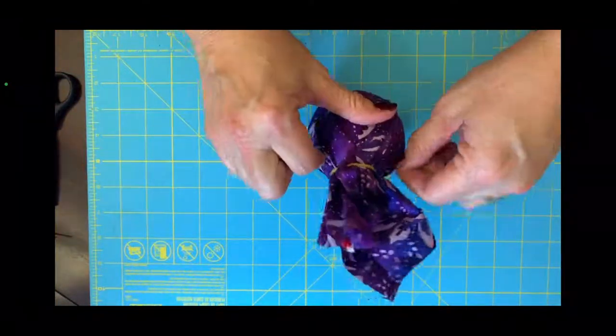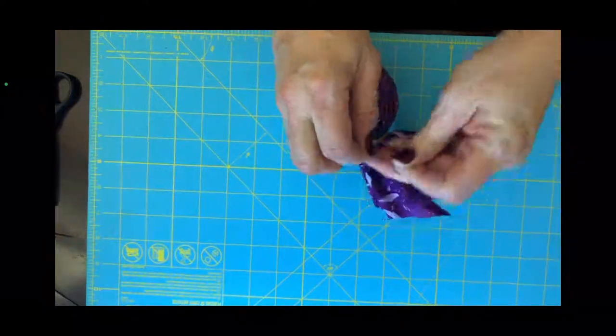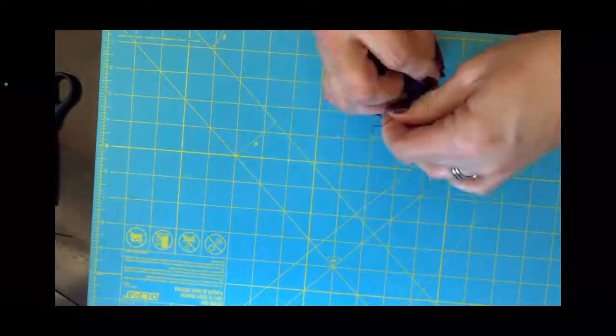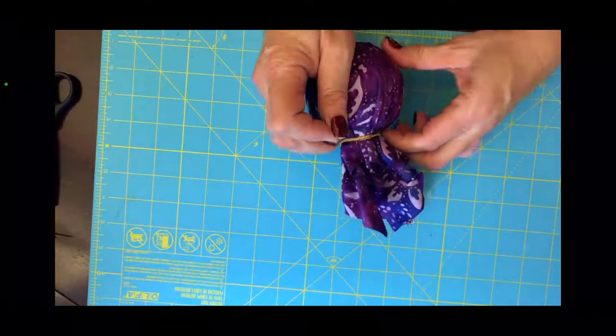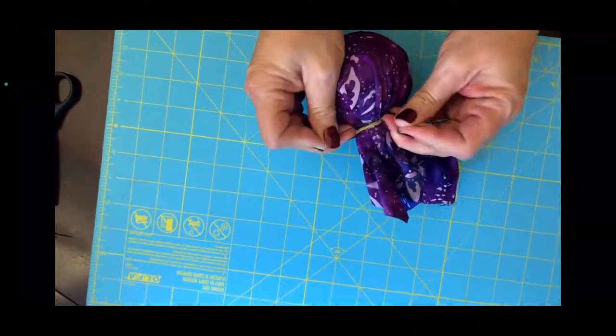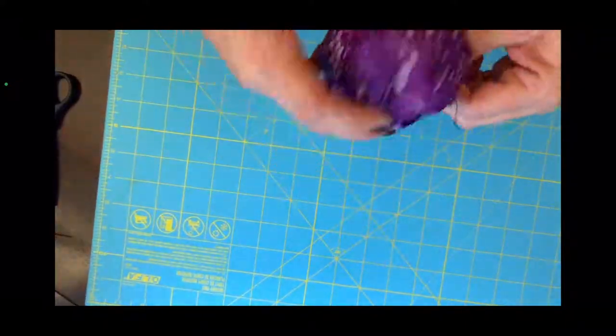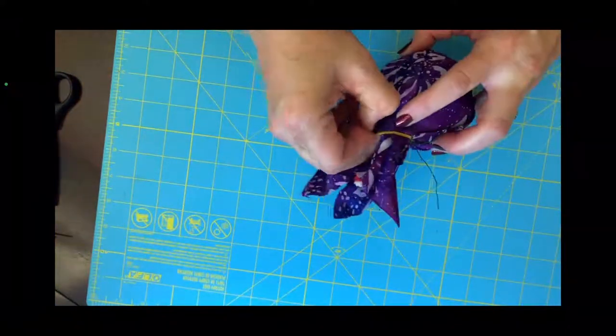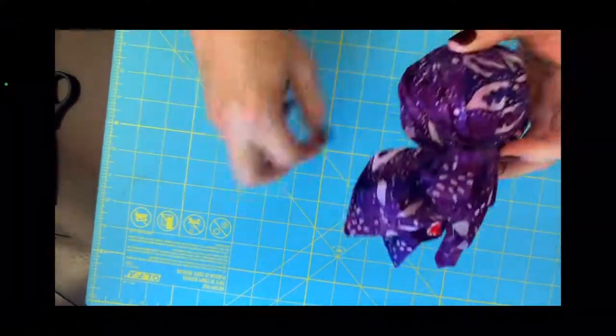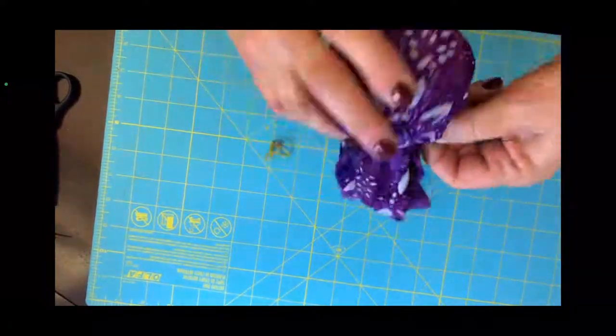I'm going to take my piece of wire that I cut and I'm going to wrap it around. That's why that rubber band was really helpful. I'm going to get it underneath the rubber band though, that's the trick. Twist it and twist it and twist it.